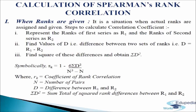When ranks are given, it is a situation when actual ranks are assigned and provided. The following steps are observed to calculate the correlation coefficient. First, we represent the ranks of the first series as r1 and the ranks of the second series as r2. Then we find the values of d, that is the difference between the two sets of ranks: d equals r1 minus r2. Next, we find the squares of these differences to obtain sigma d square. Then we use the formula: rk equals 1 minus 6 sigma d square divided by n cubed minus n, where rk is the coefficient of rank correlation, n is the number of pairs, d is the difference between r1 and r2, and sigma d square is the sum total of squared rank differences.